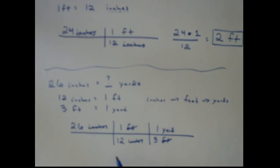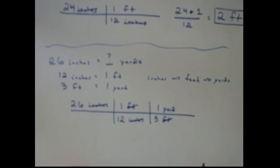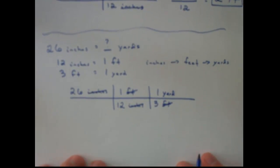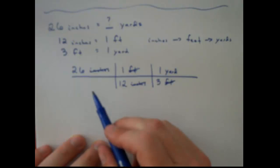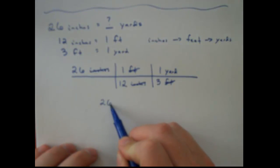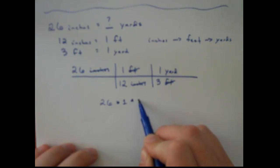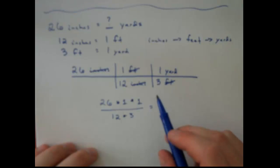So now I have to do this final step, do my math. I'm going to slide down here. And as I slide, I've got 26 times 1 times 1, and that equals 12 times 3. And if I do all that math out and reduce it, I get 26 divided by 36.